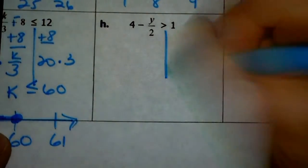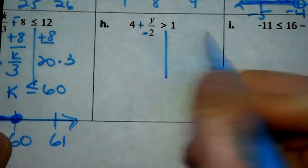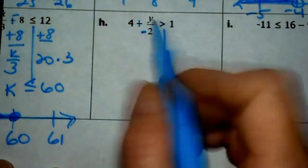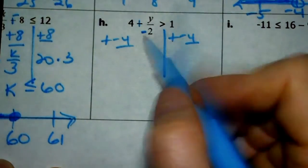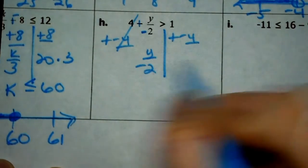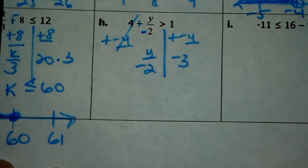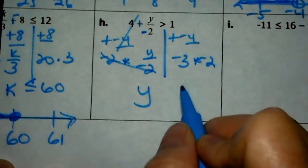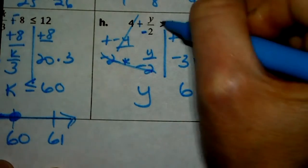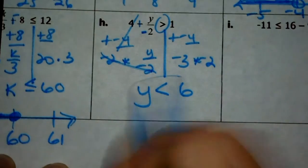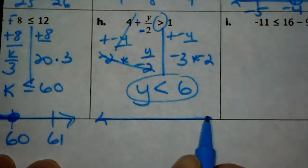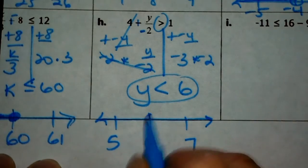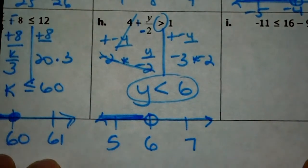Two more. I want to get rid of the 4 first that's being added to the variable term, so I add a negative 4 — it's okay to add a negative 4, you don't switch anything. I'm left with y over negative 2 on this side, and 1 plus negative 4 is negative 3 on this side. Now to get rid of dividing by negative 2, I need to multiply both sides by negative 2 — we just multiplied both sides by a negative! So negative 3 times negative 2 is 6. Because I multiplied each side by a negative, I switch greater than to less than. 6 is in the center. If y is less than 6, open circle and shade to the left.